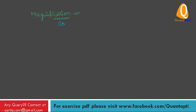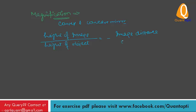Magnification for convex and concave mirror, for both mirrors magnification is given by height of image upon height of object is equal to minus image distance upon object distance.